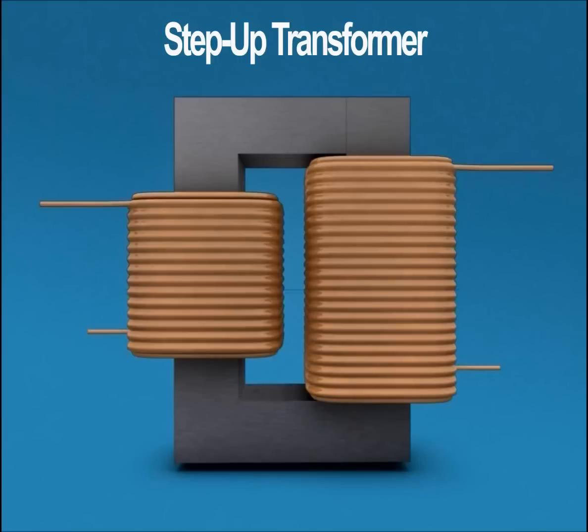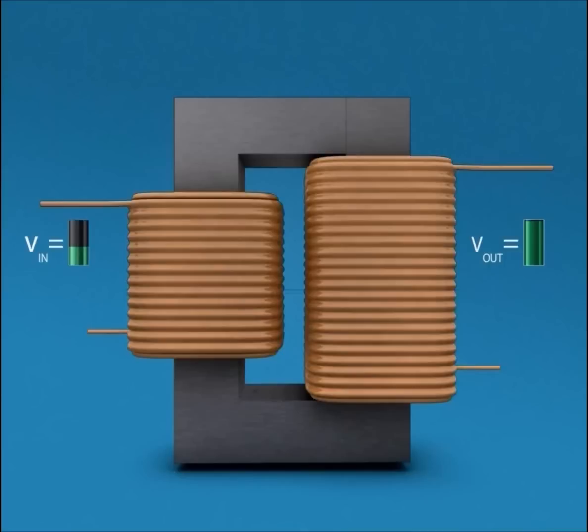In this case, voltage which is induced on secondary coil V out is higher than the voltage which is applied V in on the primary coil, whereas the current gets reduced as the power has to remain constant.